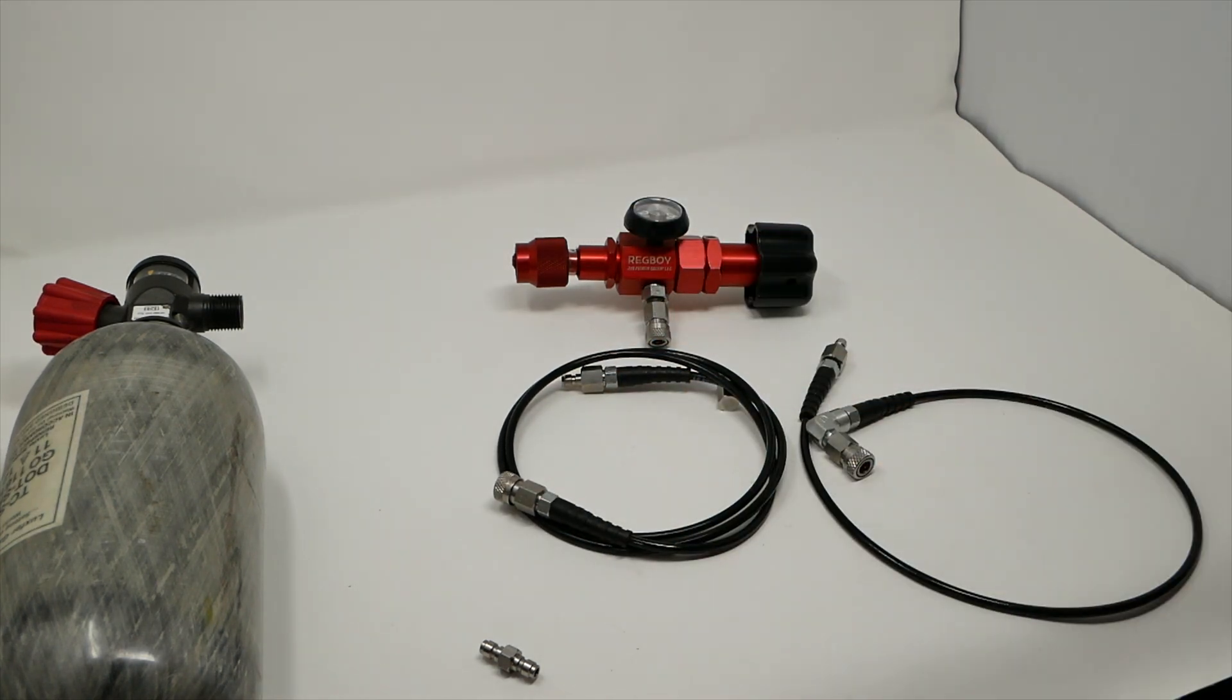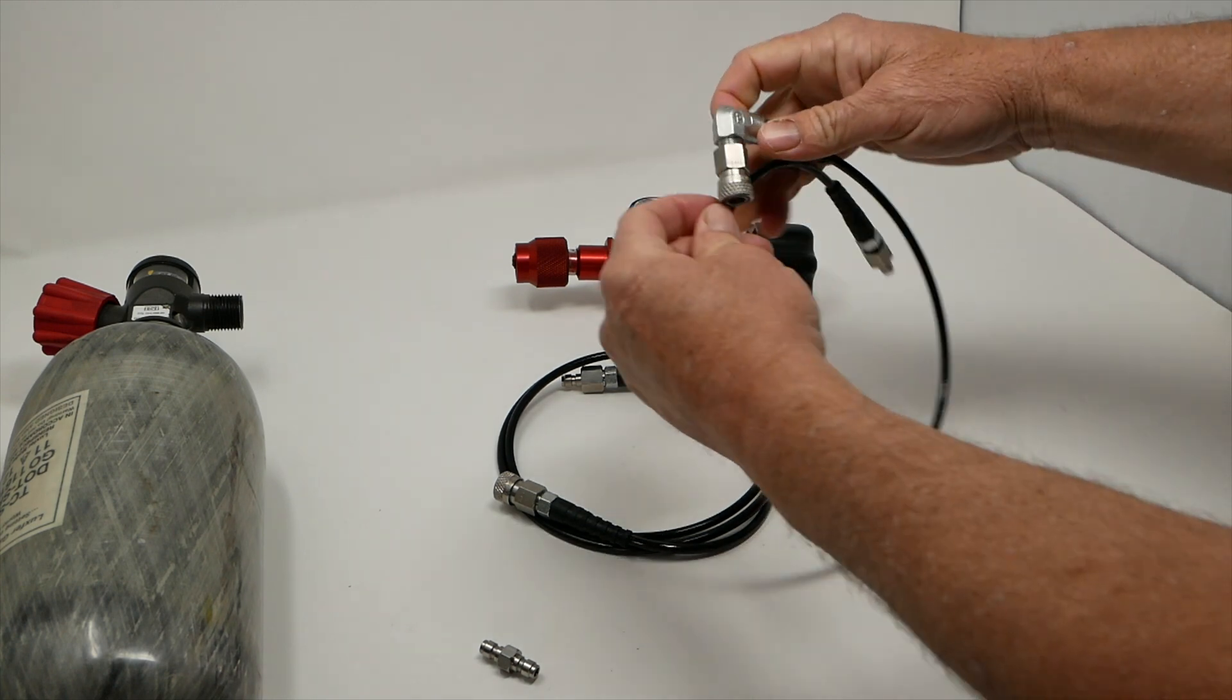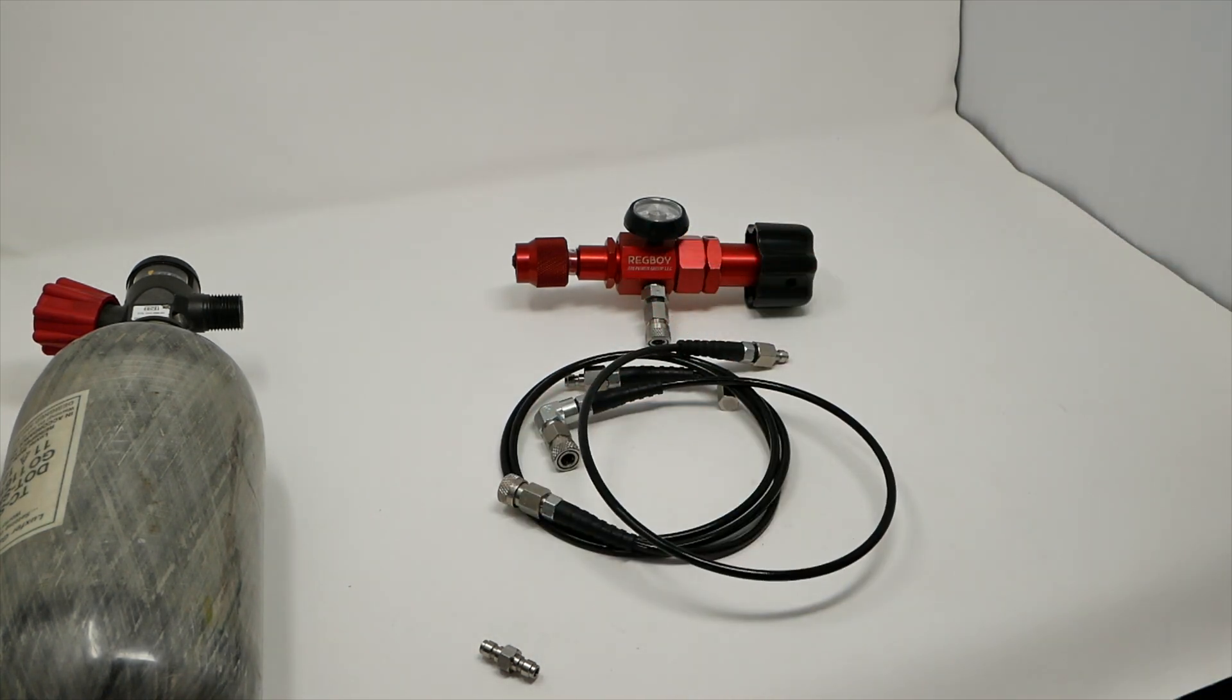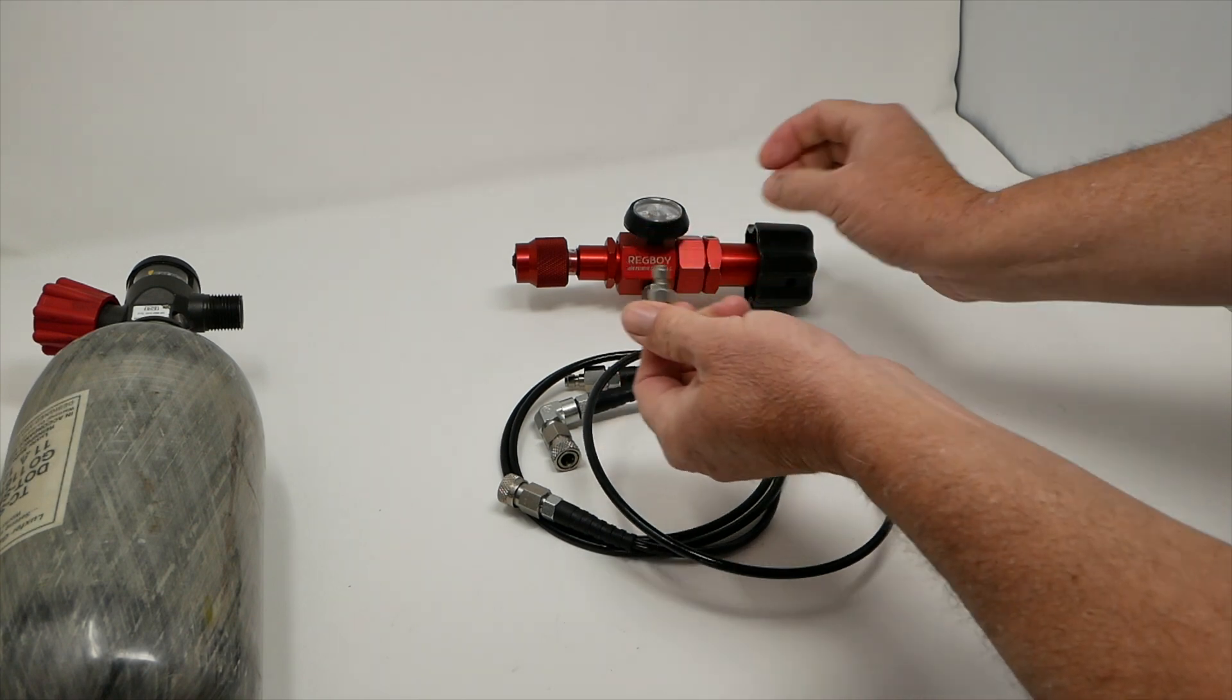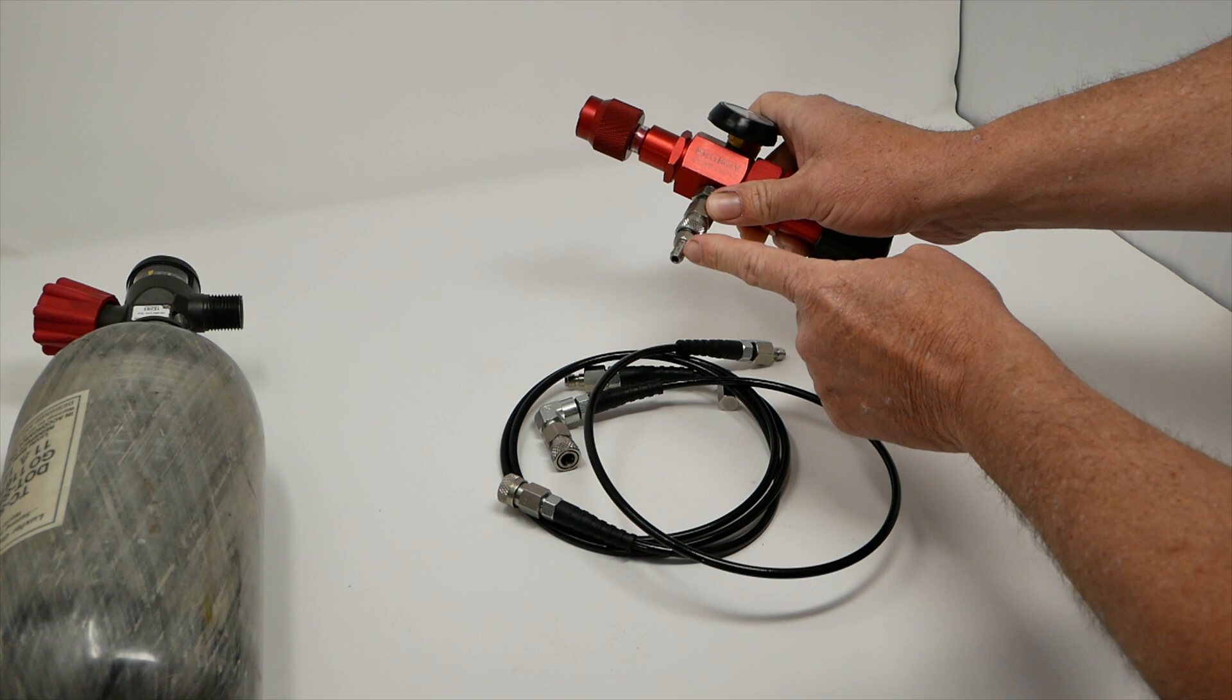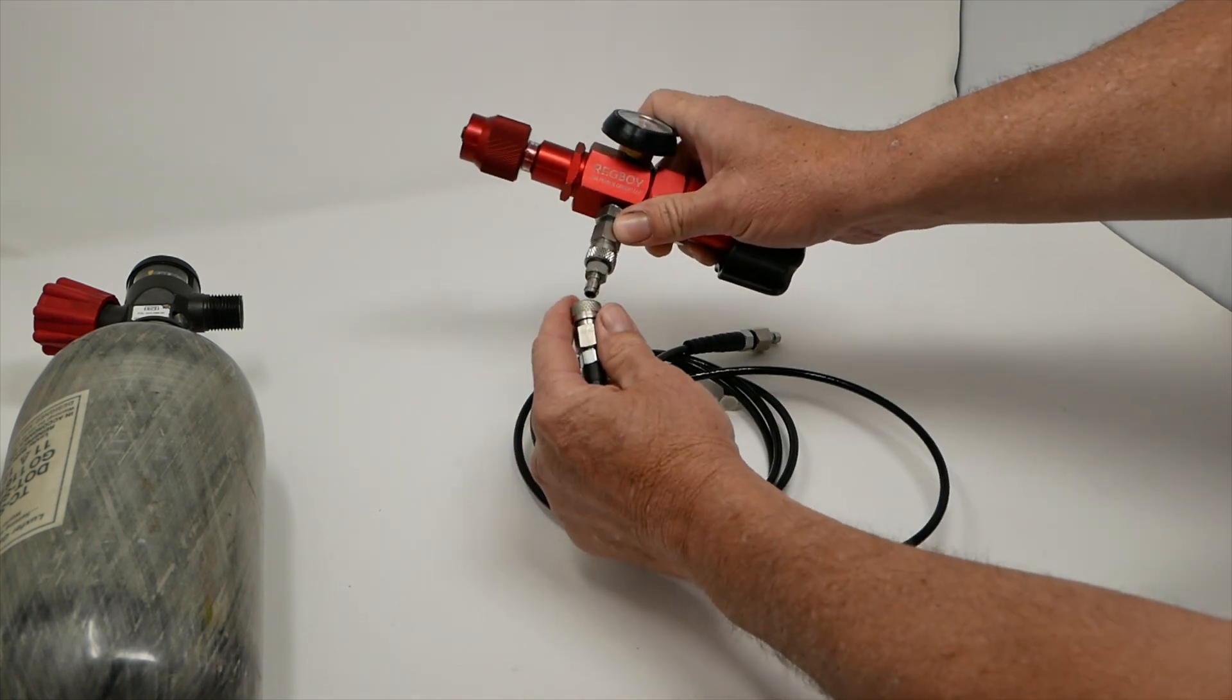We make our own custom hoses. We can make them any length you want. We can also make them right angled, just like that. We include the male to male foster, like I mentioned earlier, and this will go in here and convert this to a female, or excuse me, to a male foster. That allows you to connect female fittings on it.